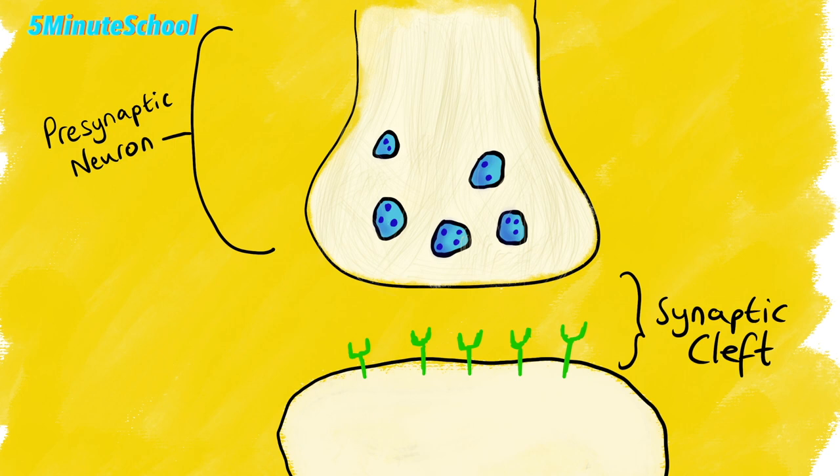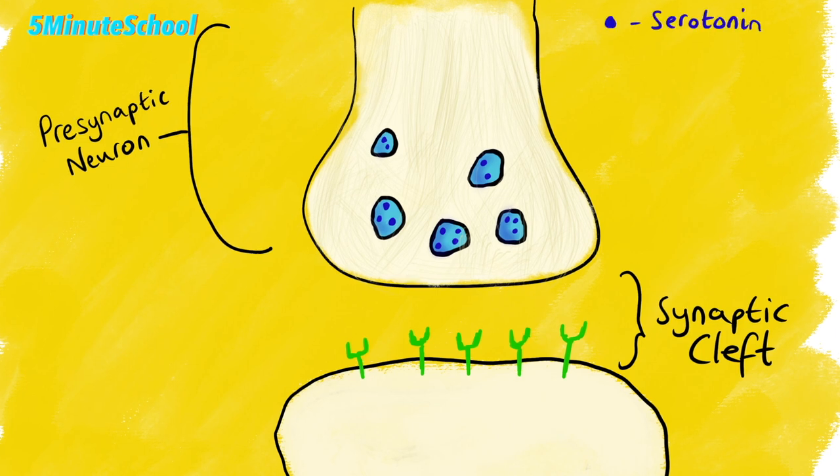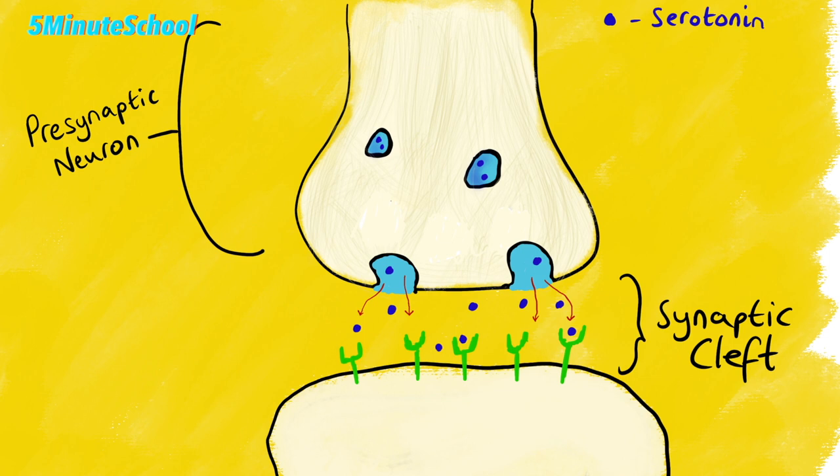If we look at the synapse, this is often where these neurotransmitters are released. In the presynaptic membrane, in the case of serotonin, we have serotonin stored in vesicles, and when a nerve impulse comes along, these vesicles fuse with the presynaptic membrane to release serotonin into the synaptic cleft. Here they bind to postsynaptic receptors, and then the effects of serotonin are felt.